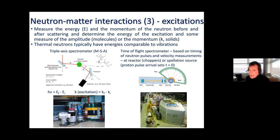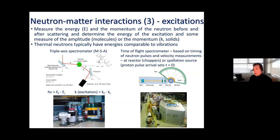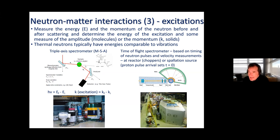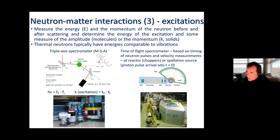This time-of-flight approach gives you the incident energy, the scattered energy, and the energy difference — just like the triple-axis spectrometer. By measuring the scattering angle you also determine the change in momentum. This tends to provide all of the information — as a function of energy and momentum transfer — in one go, distributed over a large detector area, and is wonderful for creating surveys. The triple-axis spectrometer, by contrast, is used to measure individually selected points in energy and momentum transfer space.